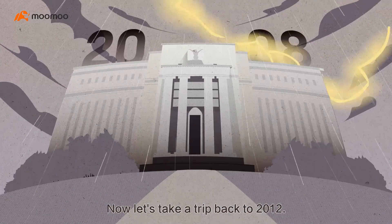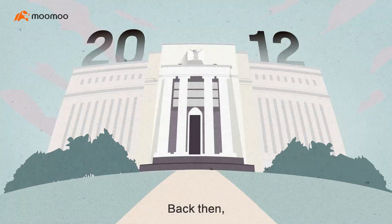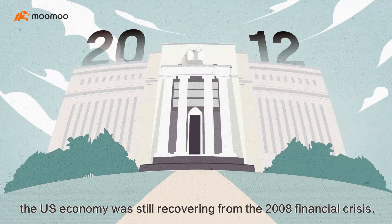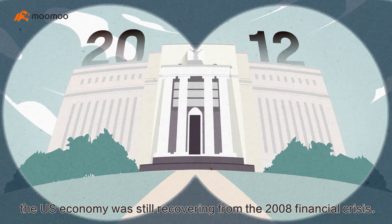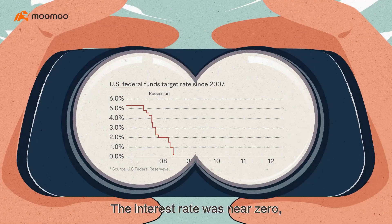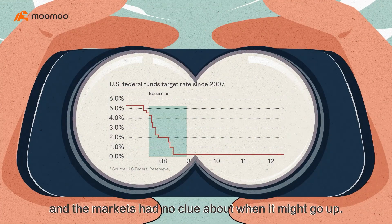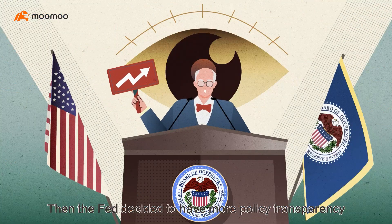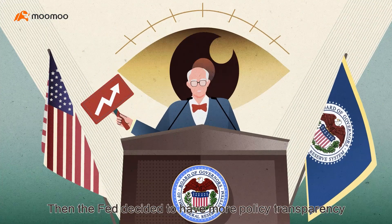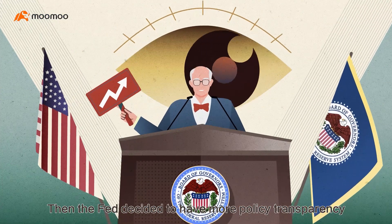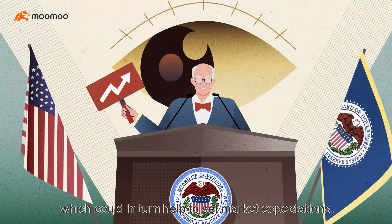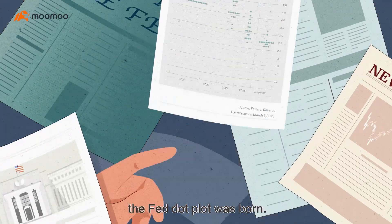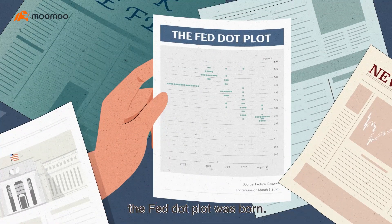Now let's take a trip back to 2012. Back then, the U.S. economy was still recovering from the 2008 financial crisis. The interest rate was near zero, and the markets had no clue about when it might go up. Then the Fed decided to have more policy transparency, which could, in turn, help to set market expectations. Out of this idea, the Fed dot plot was born.